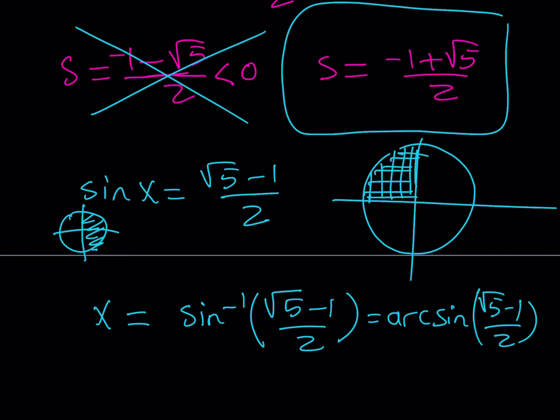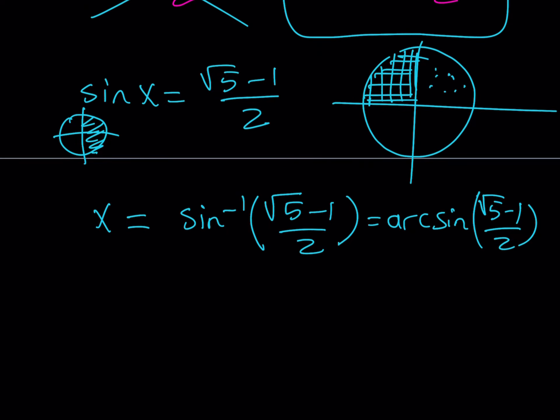If you're getting a positive value and you inverse sine it you're going to be in the first quadrant. But you don't want to be in the first quadrant, you want to put that in the second one. So you can basically subtract this from 180 degrees or subtract it from π if you're working in radians.